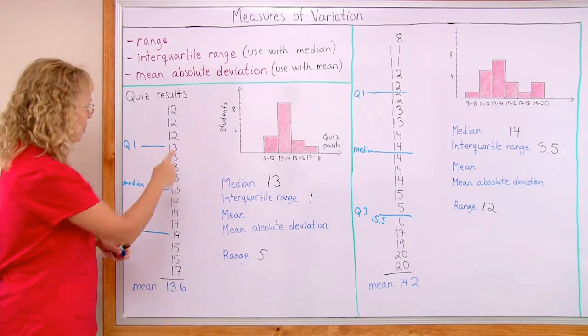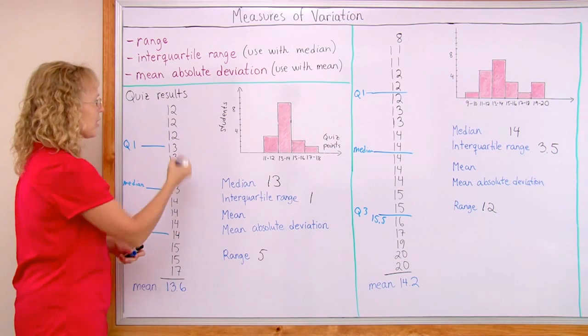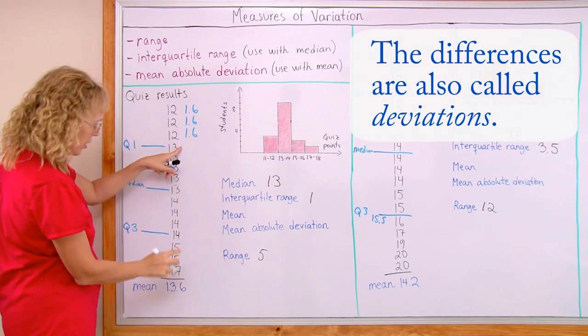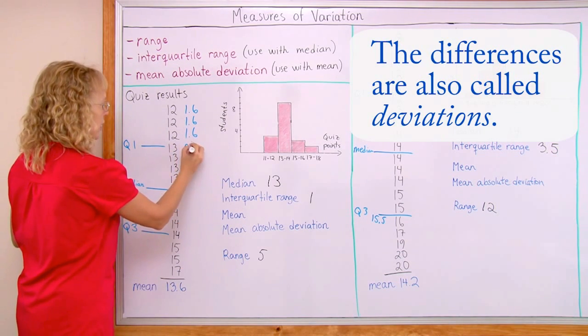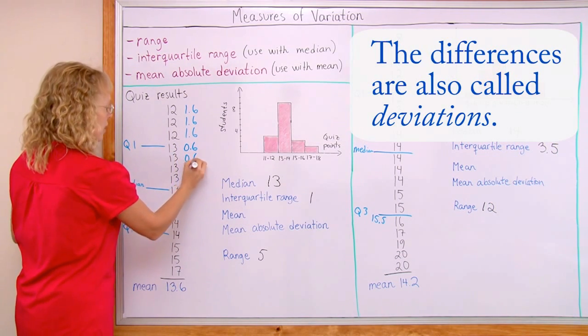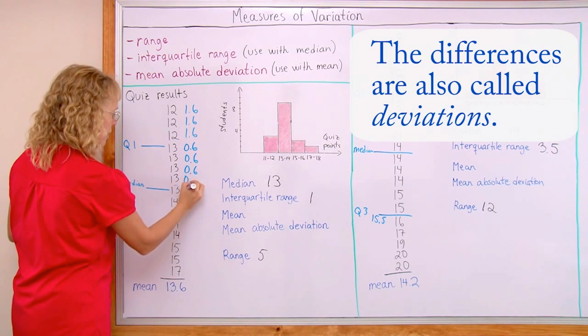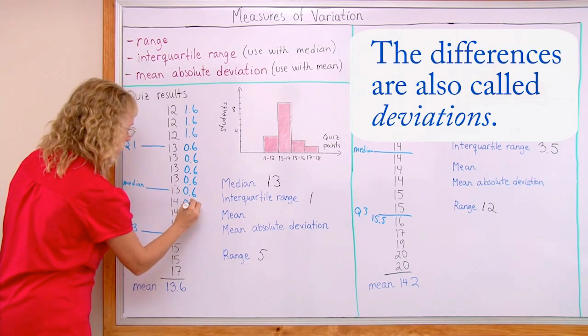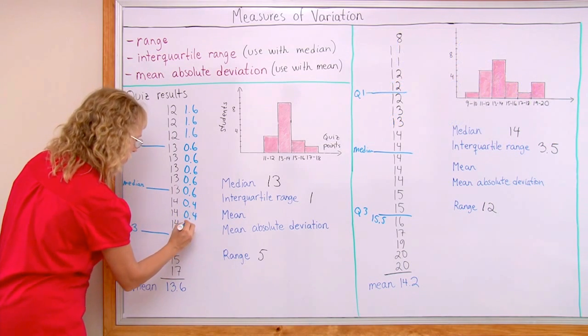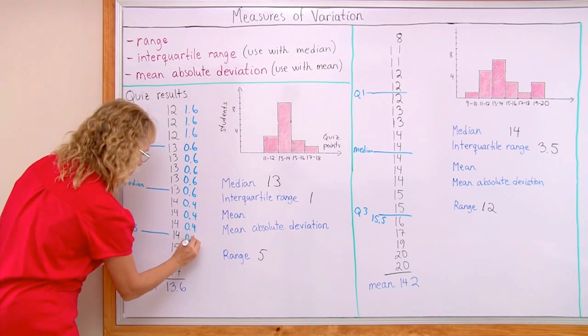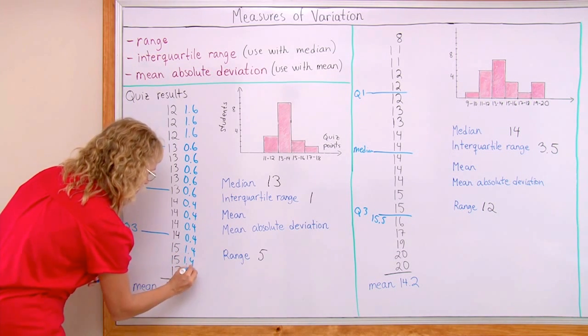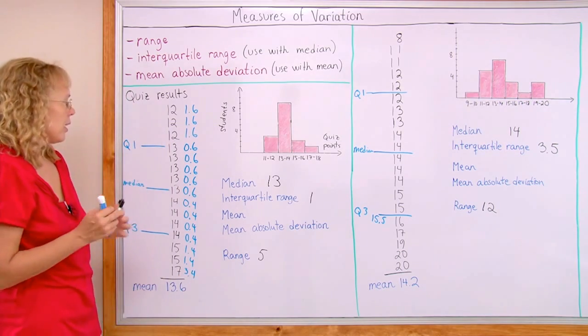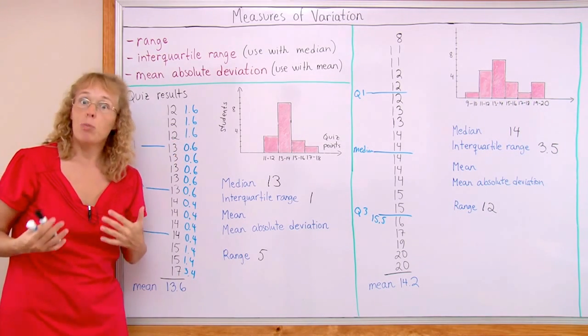So for example here. 12 and 13.6. They differ by 1.6. And then 13 and 13.6. The difference here is 0.6. Then 14 and 13.6. They differ by 4 tenths. And here they differ by 1.4. And lastly then 3.4.